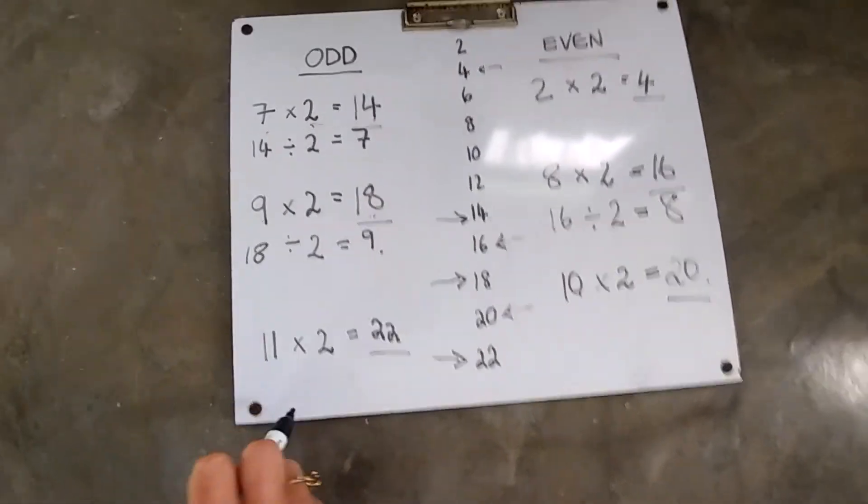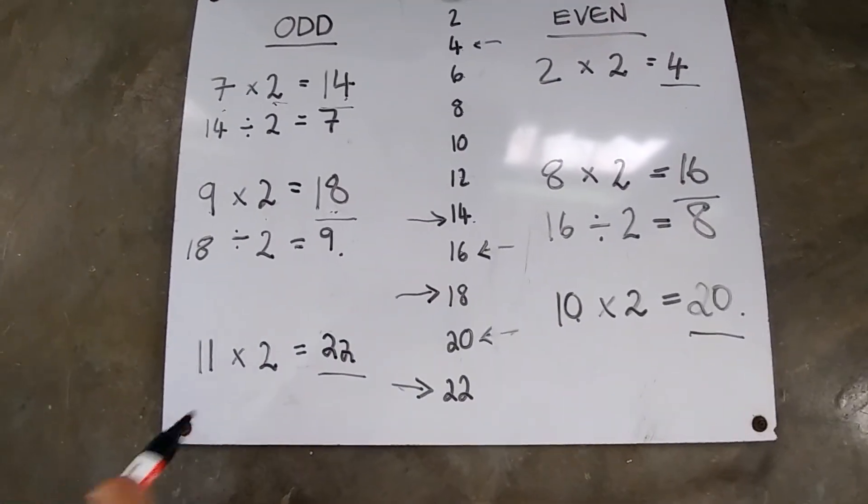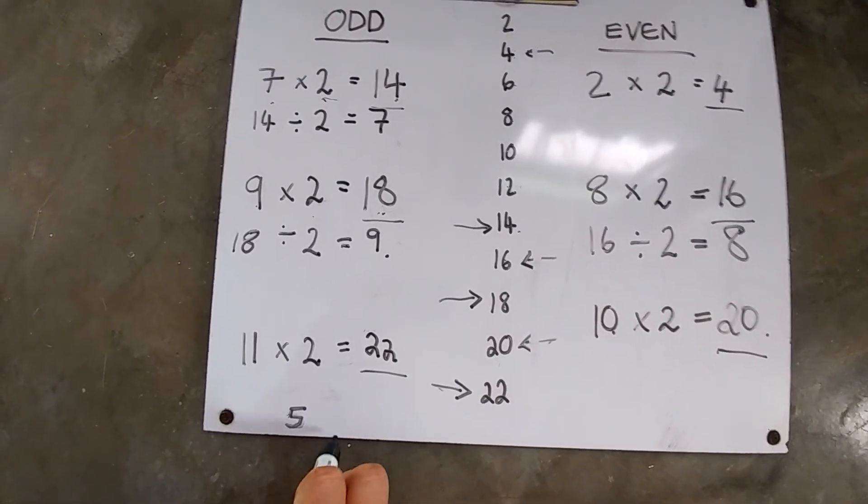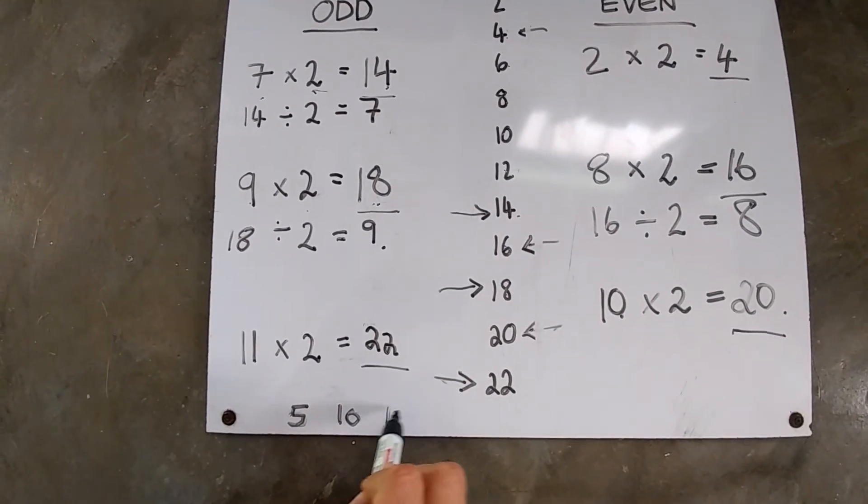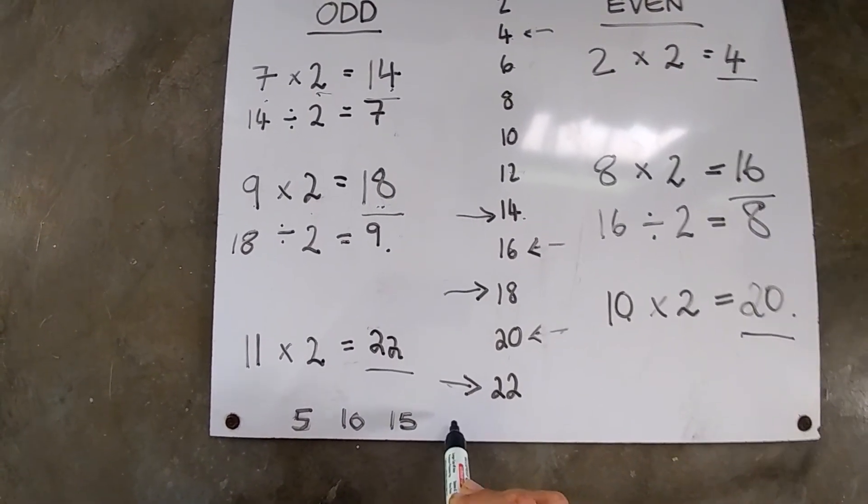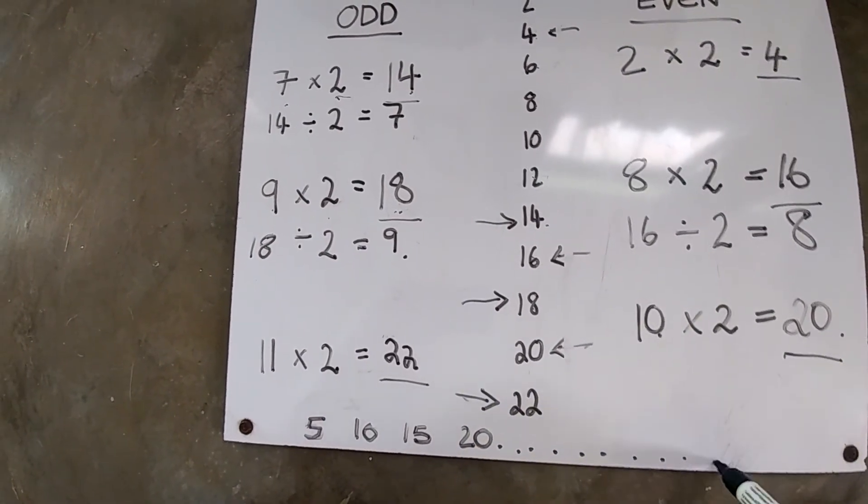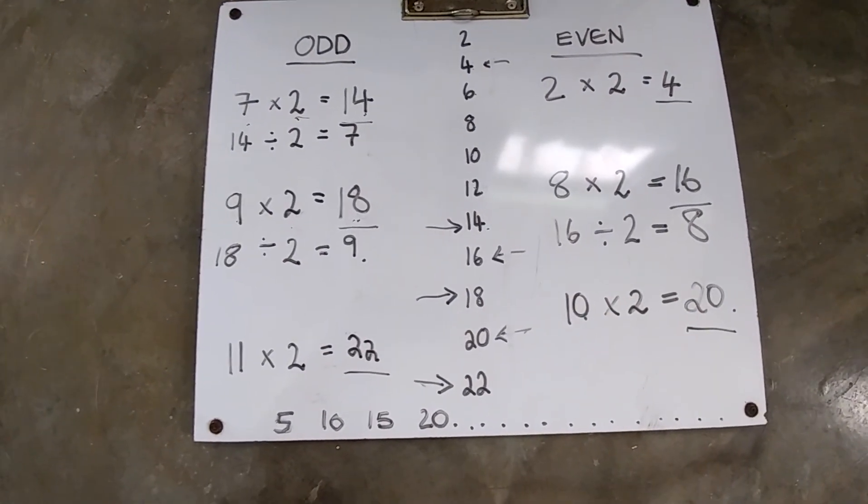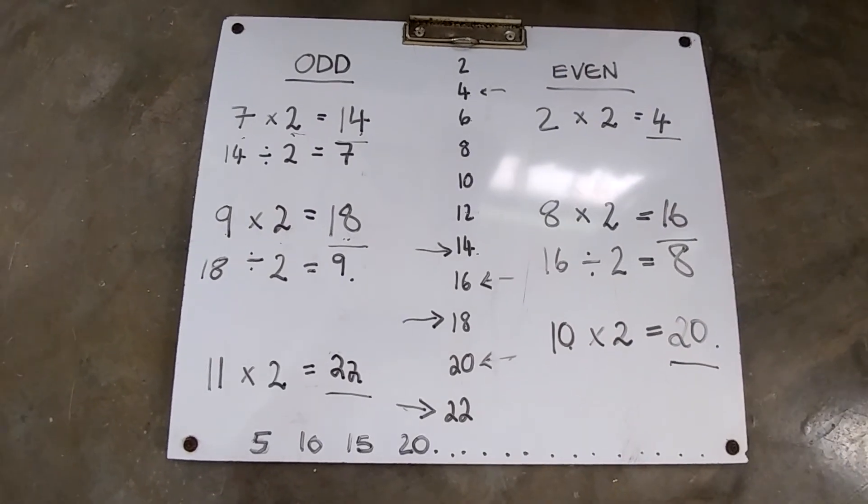Now what we're going to do is count at the bottom of our page when we've done all of this and do as many as you can. We're going to count in our 5's. So 5 plus 5 is 10, 10 plus 5 is 15, 15 plus 5 is 20. And see how far you can go counting in 5's. All right? Choose your 3 odd, your 3 even, and show me some times and divide.